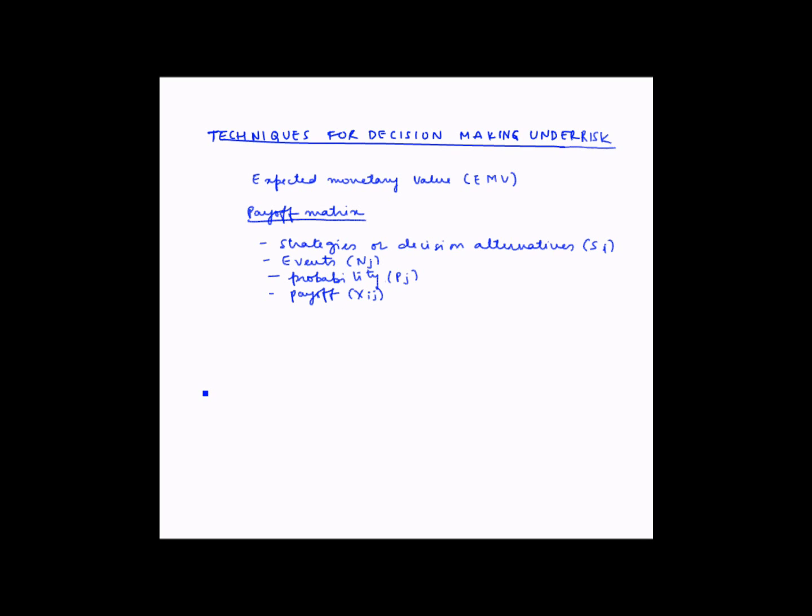Now to construct a payoff matrix, the decision alternatives or strategies are placed row-wise. So your strategies can be placed row-wise, so it can be S1, S2, S3, and so on till Sn.